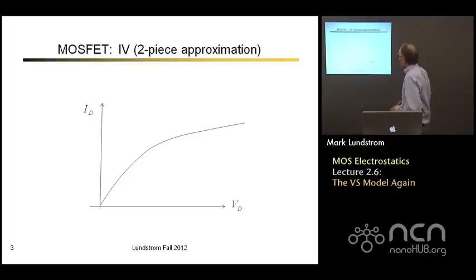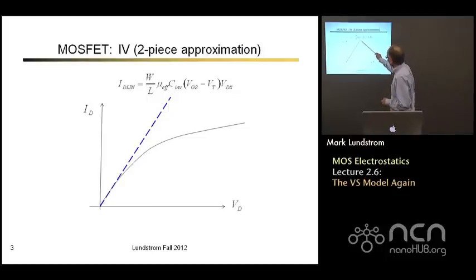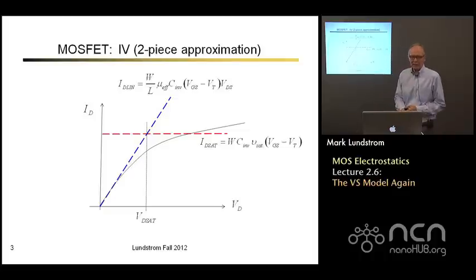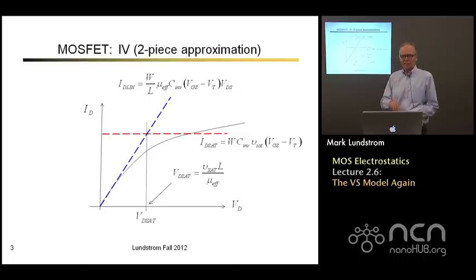Now, back in week one, we developed a simple two-piece model for the MOSFET. In the linear regime, we had a simple expression for the linear current. In the saturated regime, we had a simple expression for the saturated current. The two intersect at a critical voltage we call V_DSAT and we had a simple expression for that. Now we have a little more appreciation as to how the drain voltage affects the threshold voltage sub-threshold as well as above-threshold.